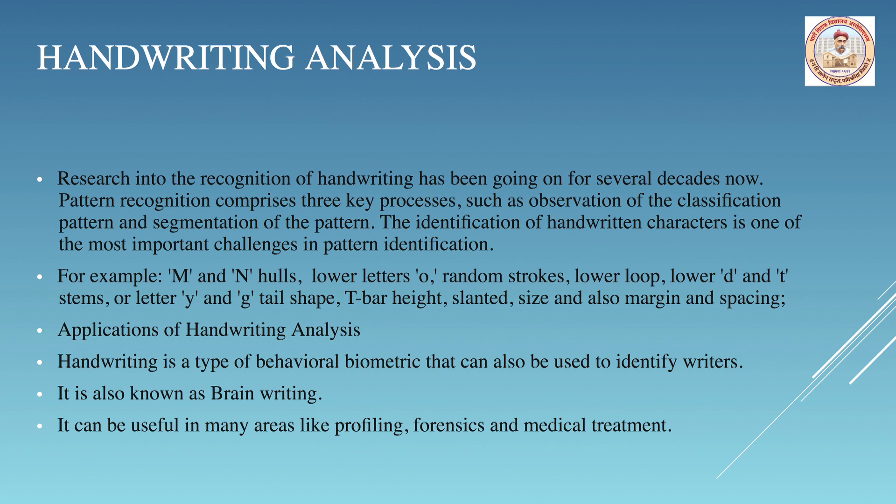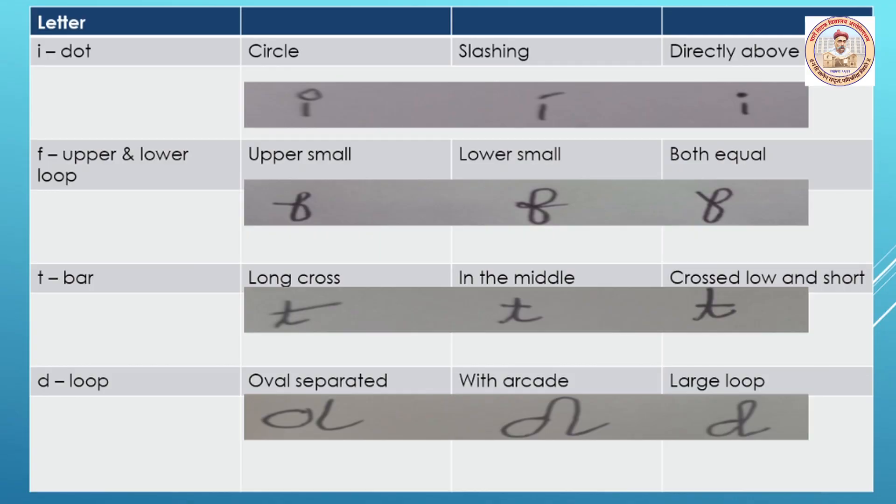Examples include M and N hulls, lowercase letter O, random strokes, loop letters like the writing loop of B or D, the stem of T, and tail-shaped letters like lowercase Y and G. Classification of pattern determines how to classify the set of alphabets — for example, whether a letter has a lower loop or an upper loop. If writing in cursive, then F has both a lower and an upper loop.